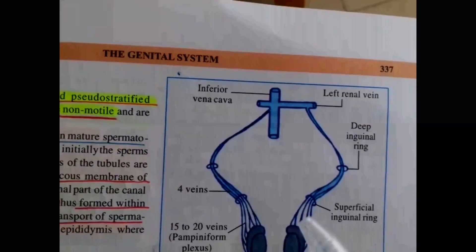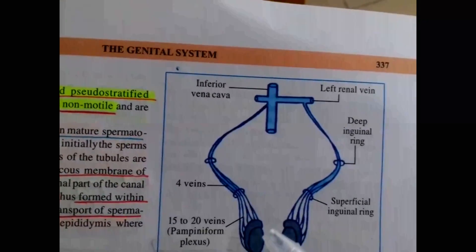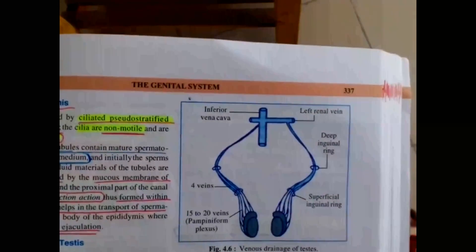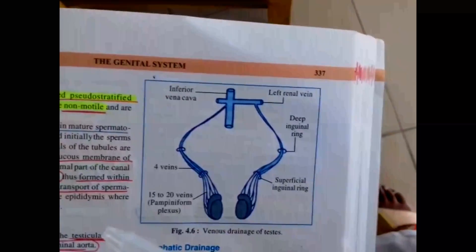The nerve supply of the testis is mainly sympathetic nerves from the renal and aortic plexus. Sympathetic nerves can sometimes sense testicular pain. Regarding development of the testis, it develops from three sources. In the seventh week of intrauterine life, the testis develops from the medulla of the undifferentiated genital ridge, along with primitive sex cells.